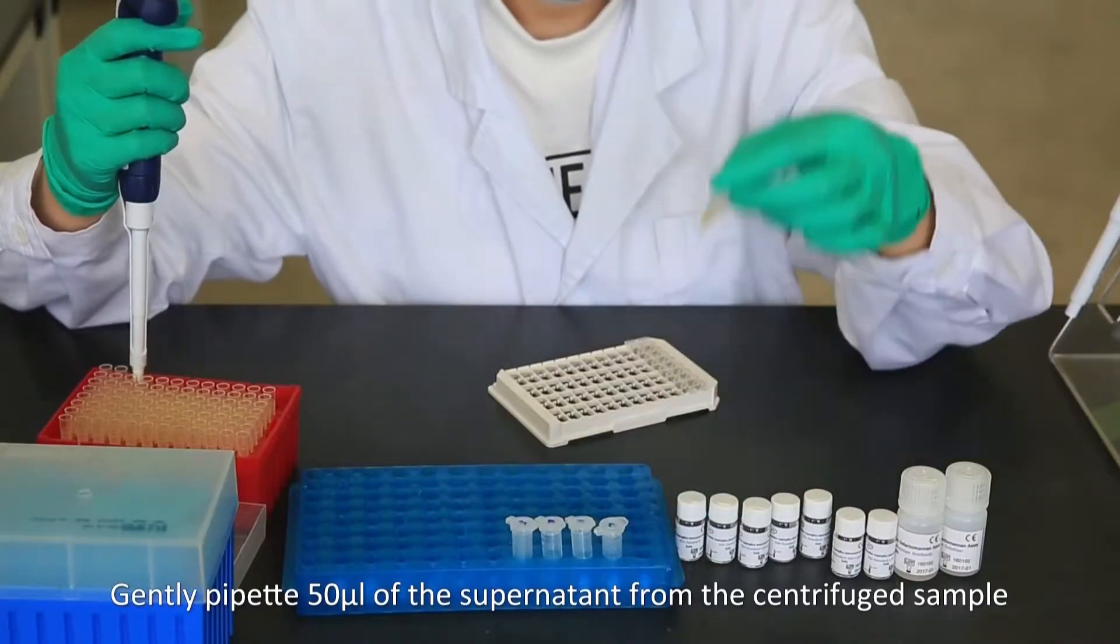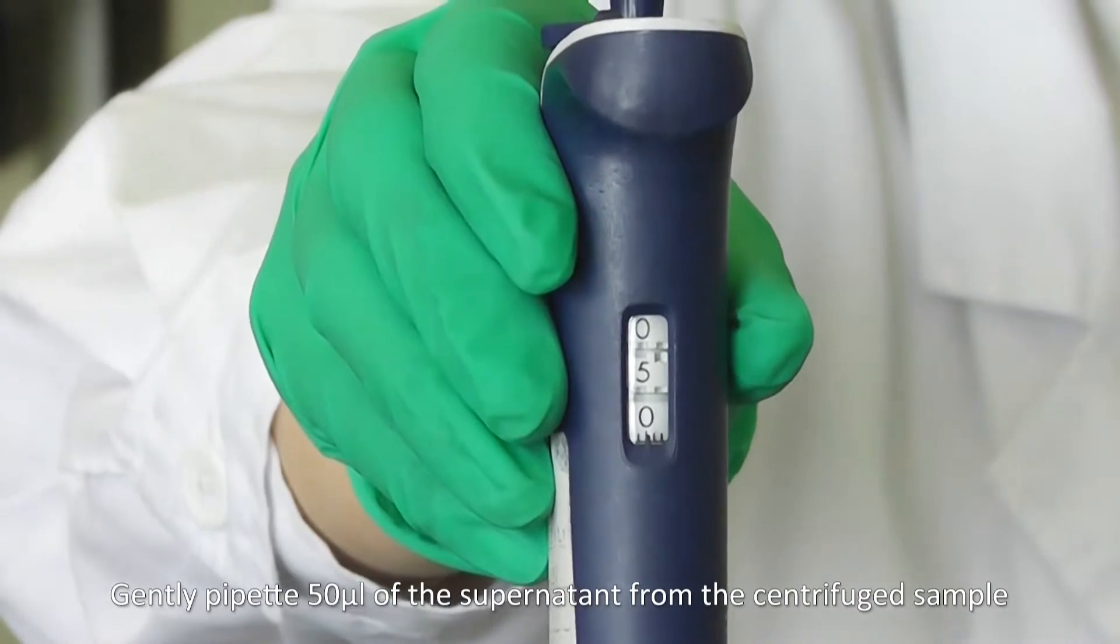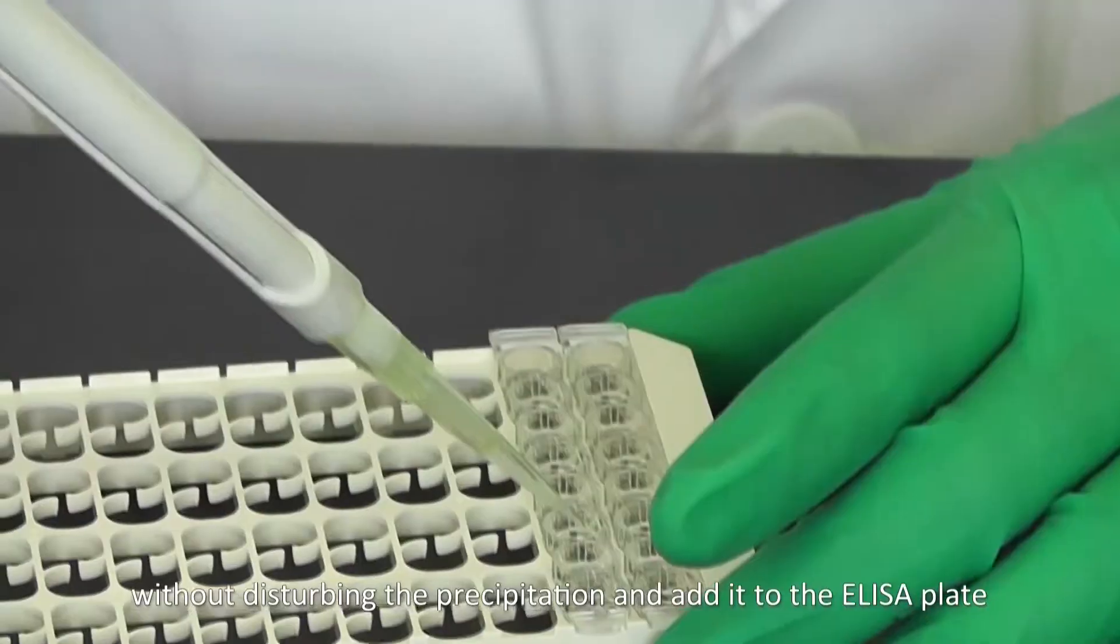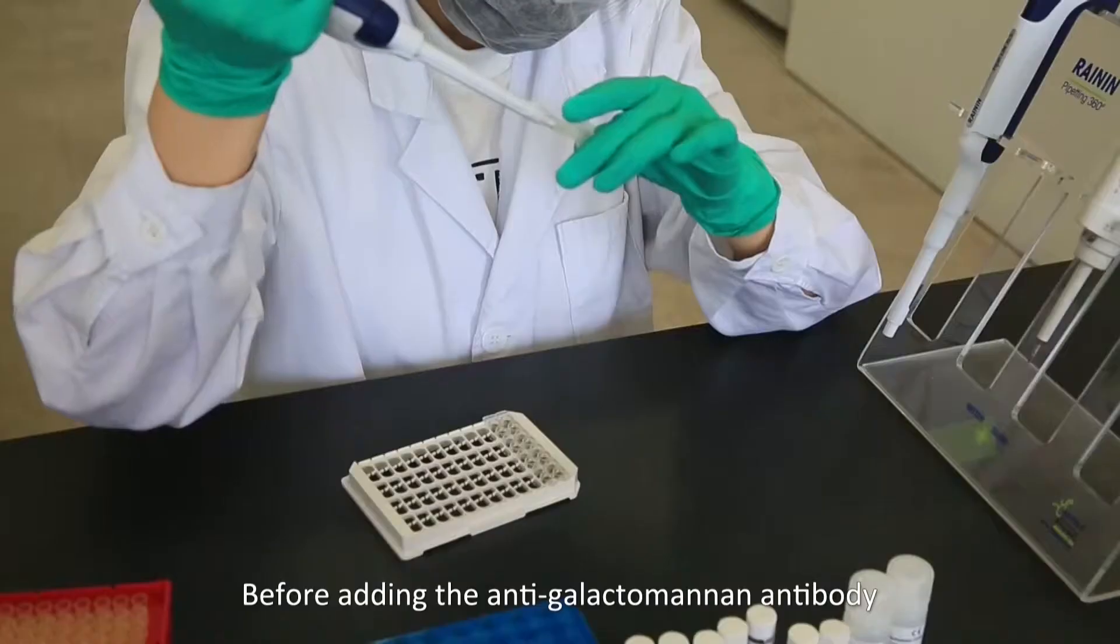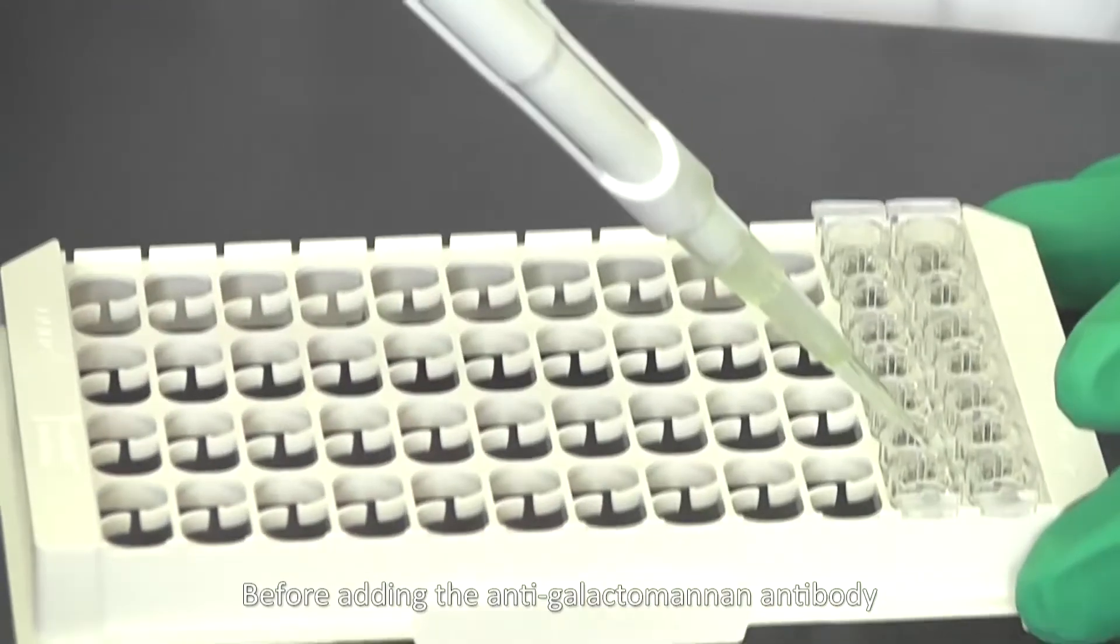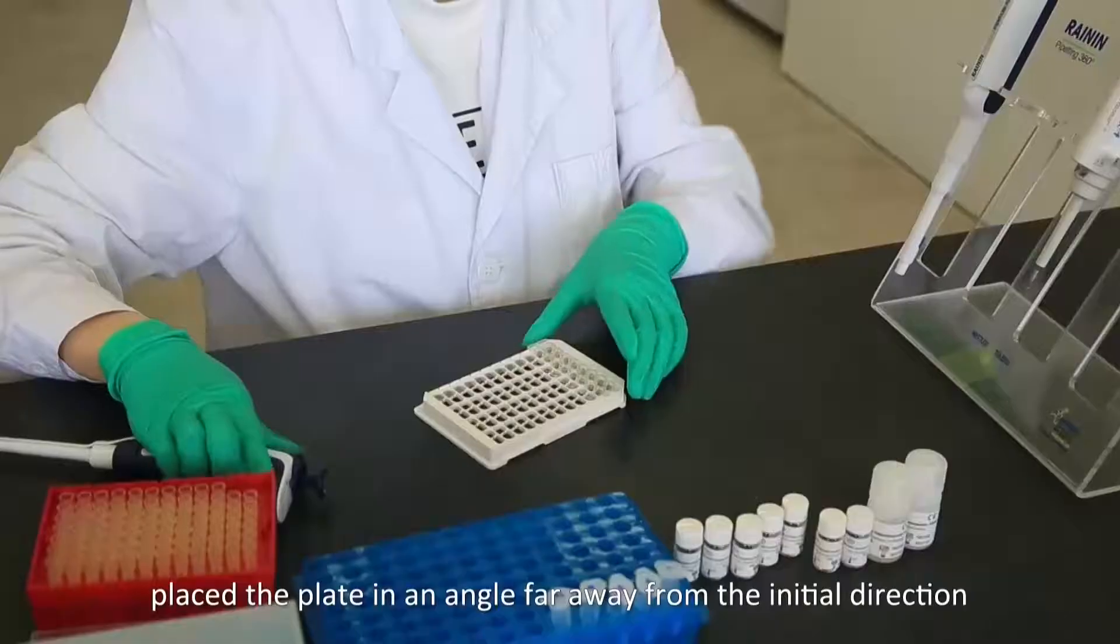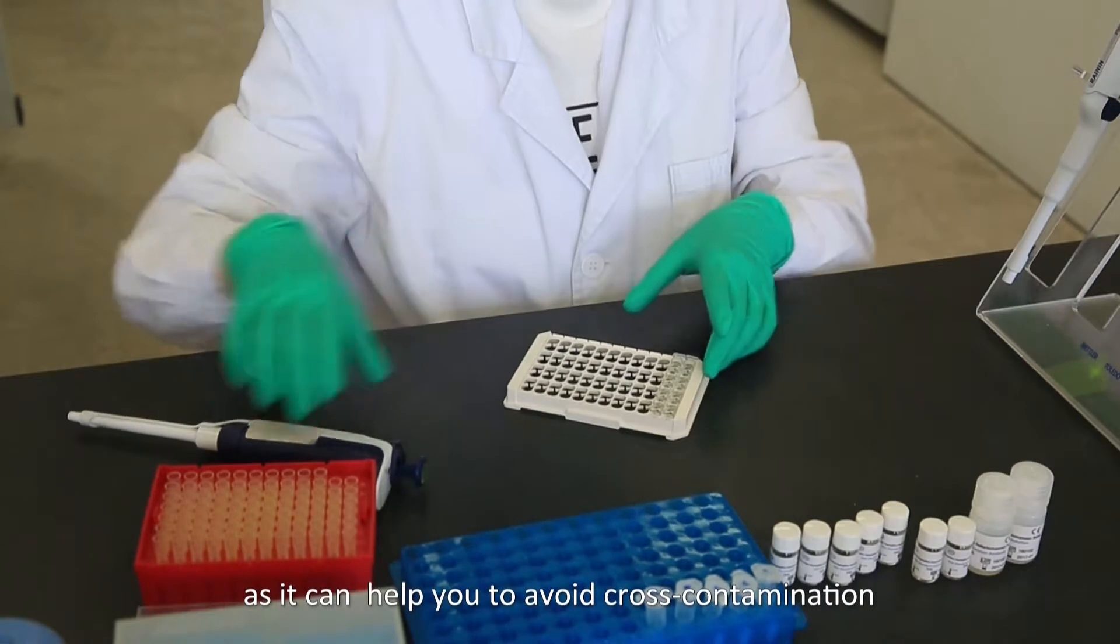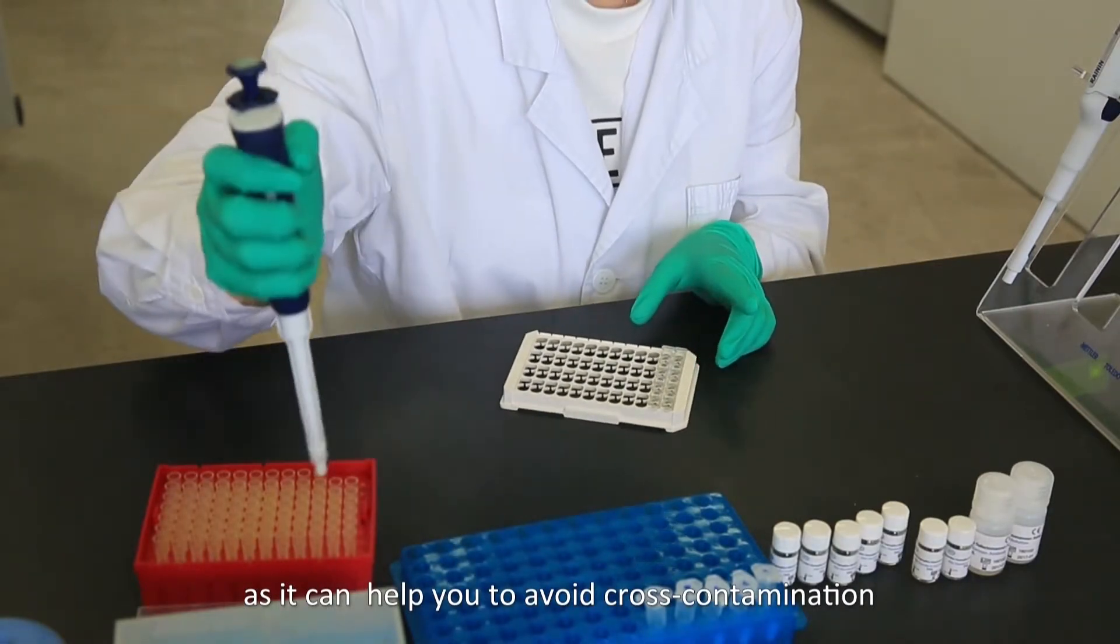Gently pipette 50 microliters of the supernatant from the centrifuge samples without disturbing the precipitation and add to the ELISA plate. Before adding the anti-galactomannan antibody, place the plate in an angle far away from the initial direction as it can help you to avoid cross-contamination.